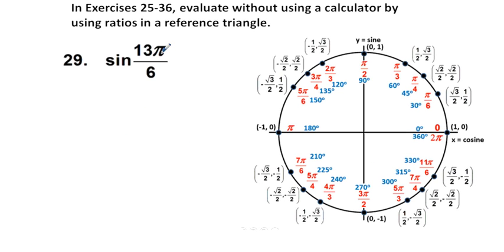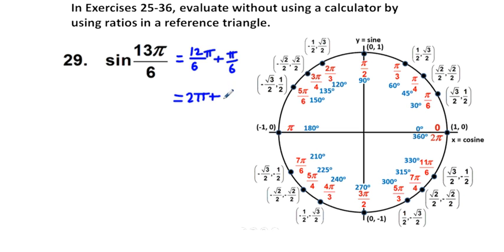Let's go on to problem 29: the sine of 13π/6. If we look at this unit circle, we do not see 13π/6 anywhere directly. But 13π/6 is going to be the same as 12π/6 plus π/6, and 12π/6 is equal to 2π. So 13π/6 means we go once all the way around to get to 2π, and then come up with another π/6. So 13π/6 is coterminal with π/6. If we drop a reference triangle — a vertical line segment to the x-axis — we're looking for the sine.